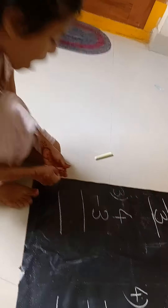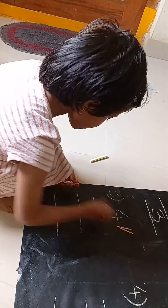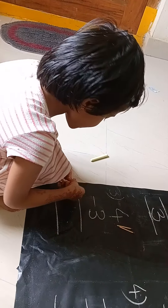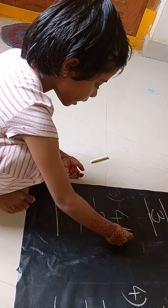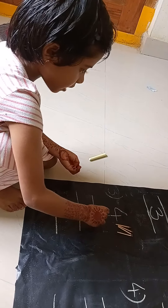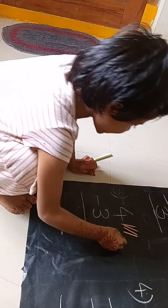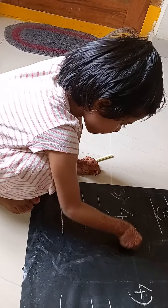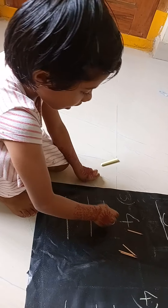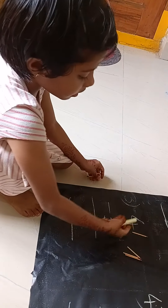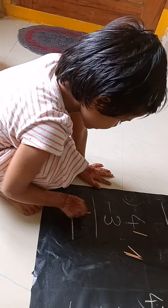We have 4 maths sticks: 1, 2, 3, 4. If I take 3 maths sticks — 1, 2, 3. How many left? 1. Answer is 1.